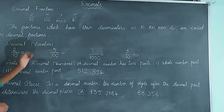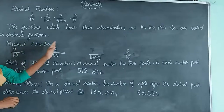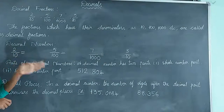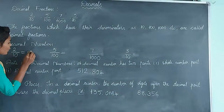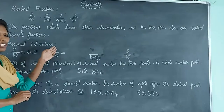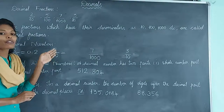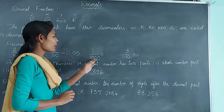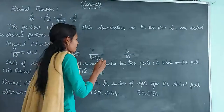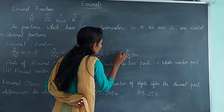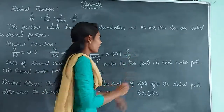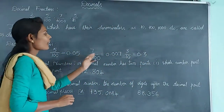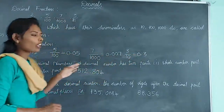Now let us know about decimal numbers. Here we have the decimal fraction 2 by 10. We can write 2 by 10 as 0.2. Here we have the decimal fraction 5 by 100, which we can write as 0.05. Here we have the decimal fraction 7 by 1000, which we can write as 0.007. And 3 by 10 we can write as 0.3. So 0.2, 0.05, 0.007, and 0.3 are called decimal numbers.